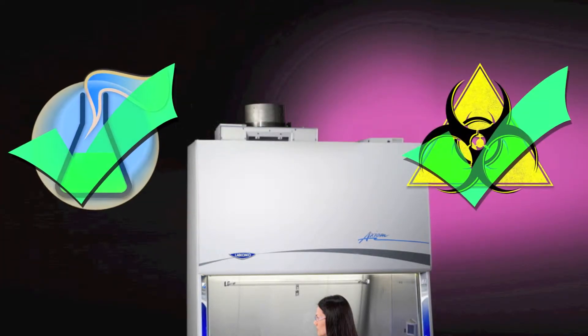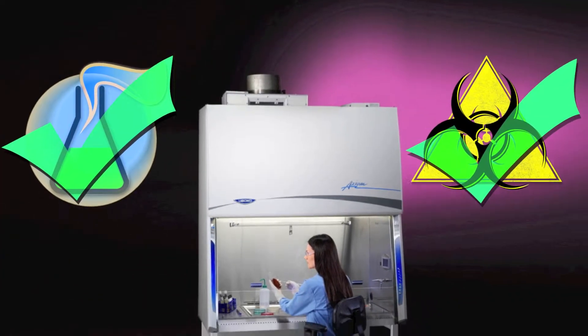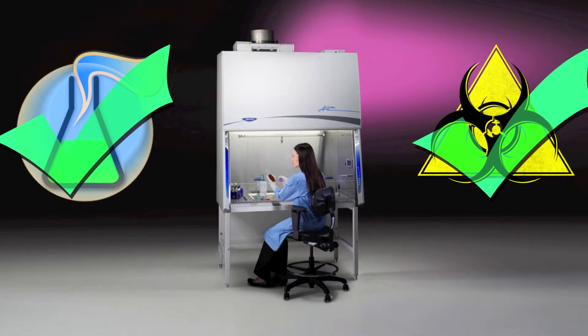The ducted type B mode is used when work requires handling hazardous vapor-forming chemicals or radionuclides.